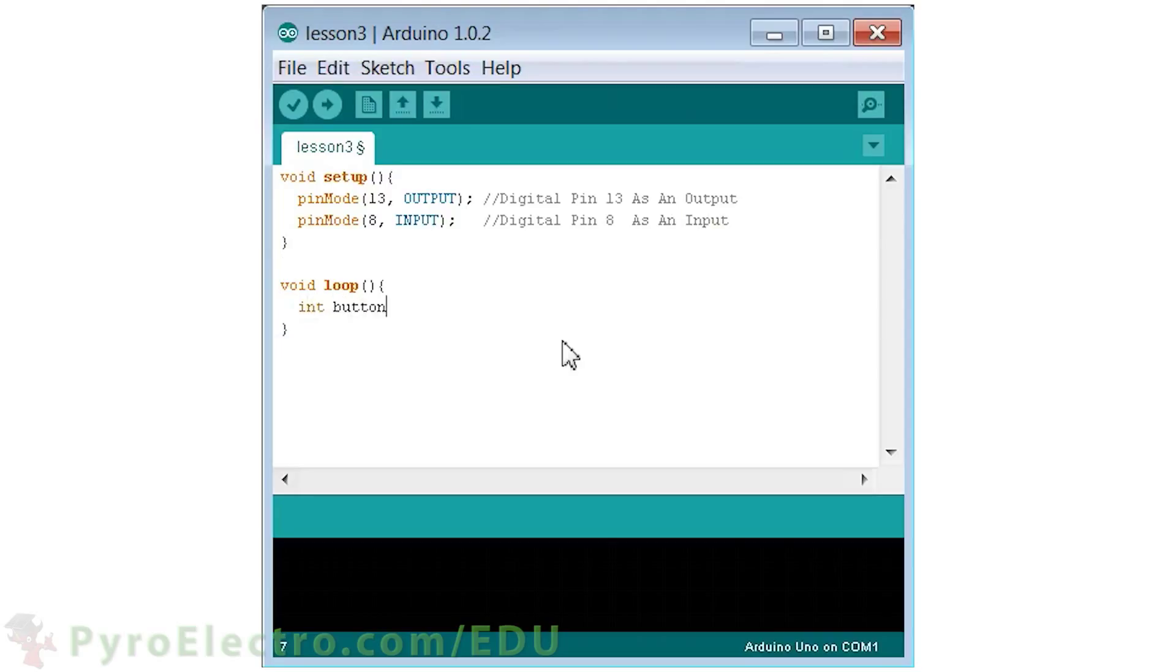Then, inside the loop function, we will first use the digital read function to read if pin 8 sees a logic 0 or logic 1. That will be stored in the integer called button state.